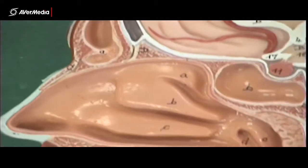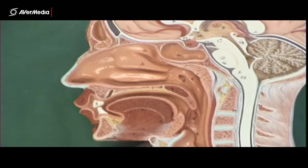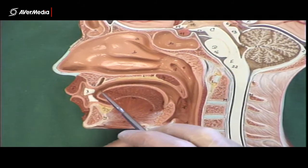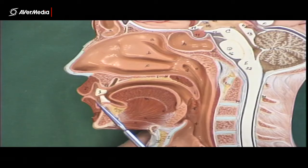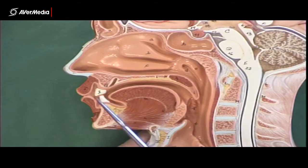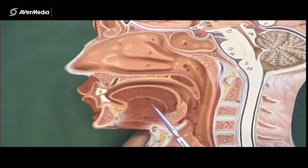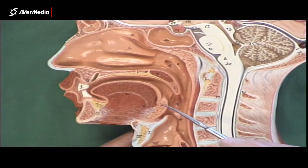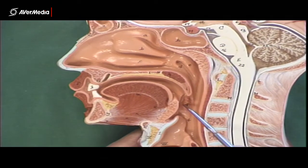Now let's have a look at this model — a mid-sagittal section of a head. Looking here, we can see the nasal cavity up here, the oral cavity proper here, and then the vestibule just here — between the lips and the teeth. On this model we can also see the apex of the tongue. Genioglossus, this large muscle belly, makes up a lot of the bulk of the tongue. We can see the lingual tonsil, the base of the tongue, and the palatine tonsil in the oropharynx.